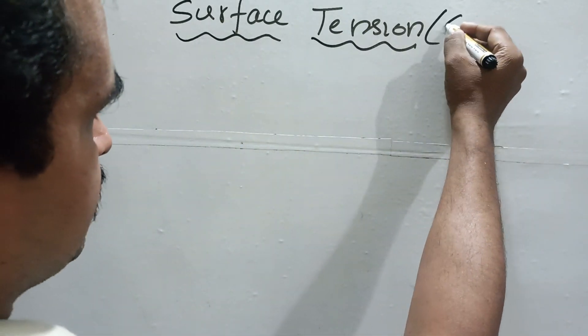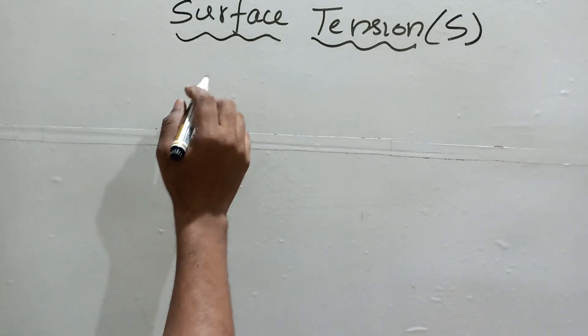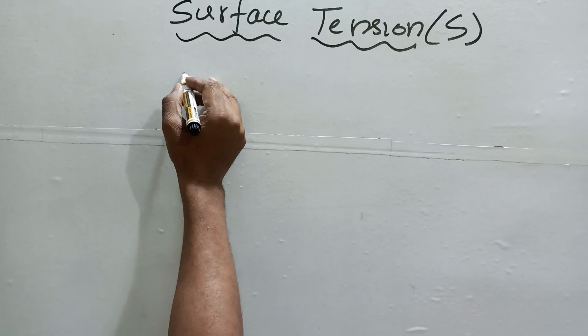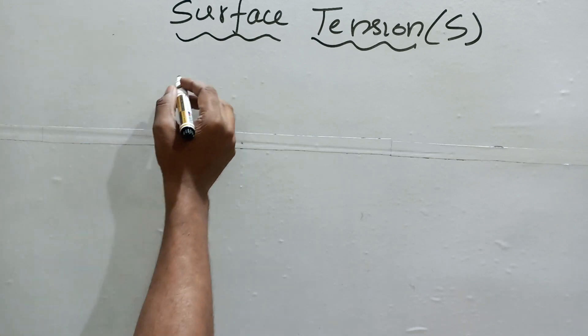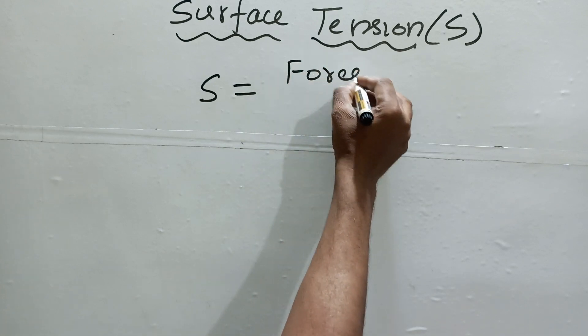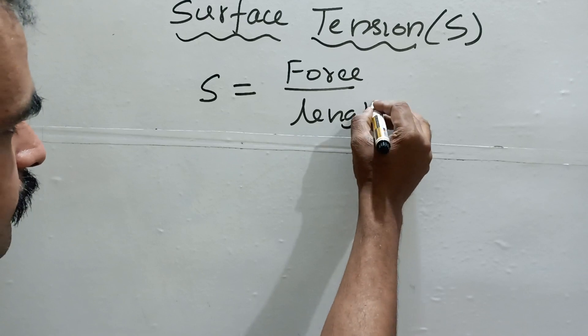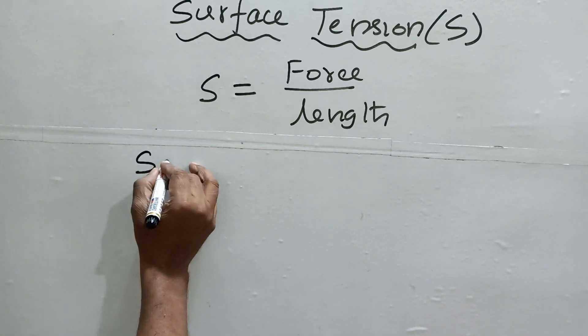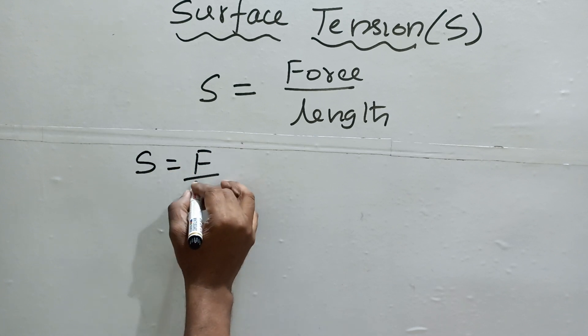The symbol of surface tension is S. Now in order to derive the dimensional formula of surface tension, first you should know the formula of surface tension. Surface tension is given by force divided by length, so you can write S is equal to F divided by L.